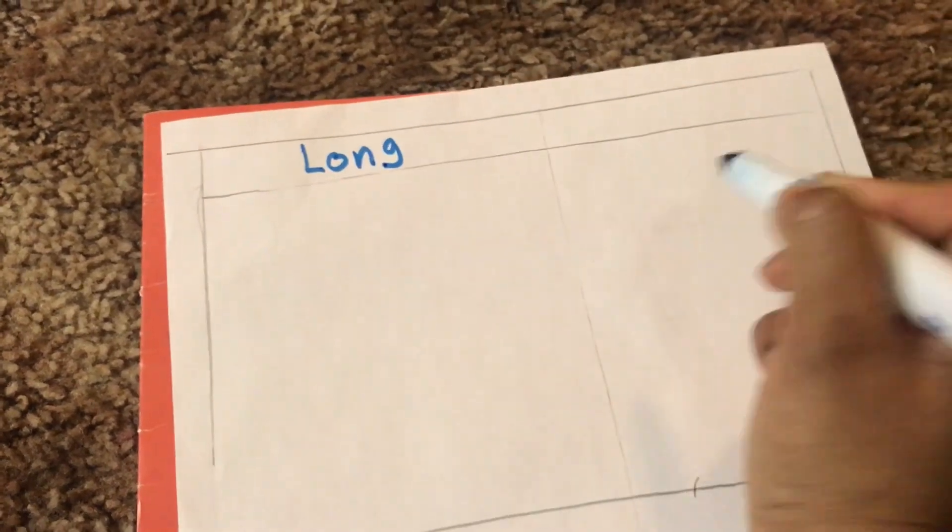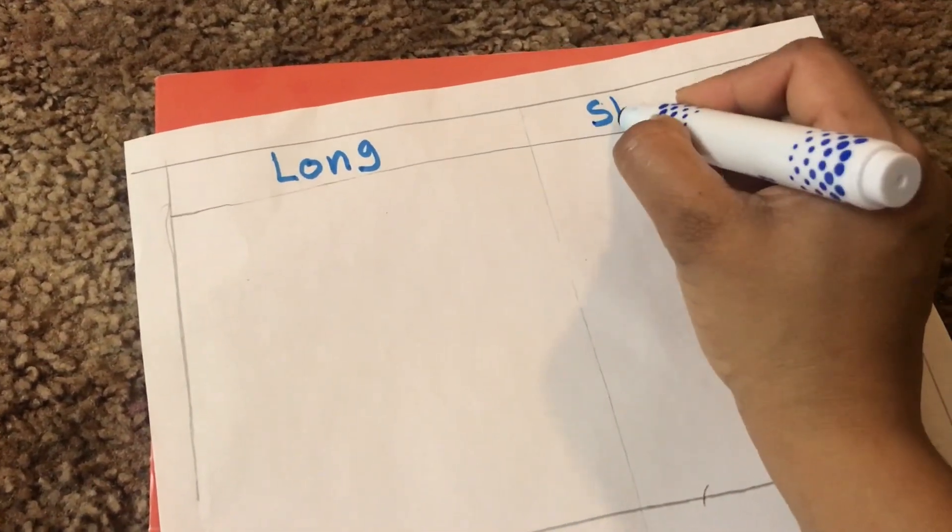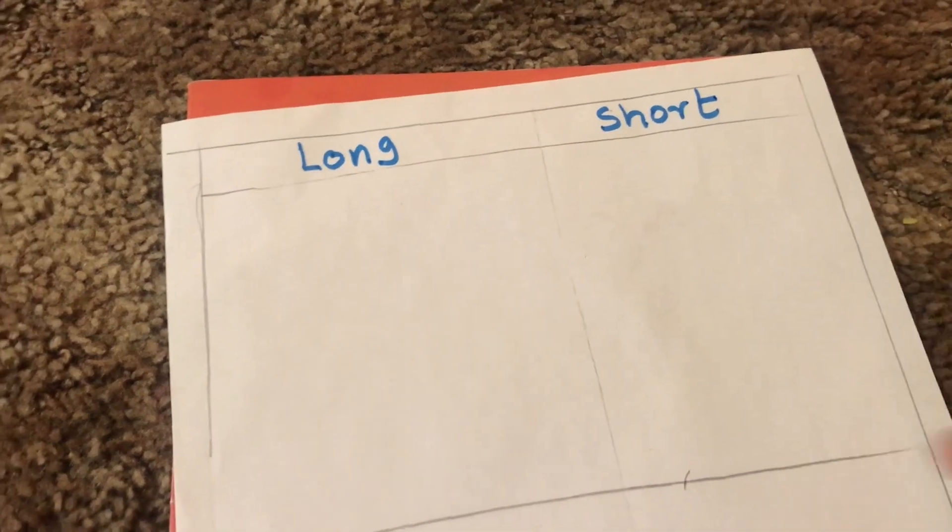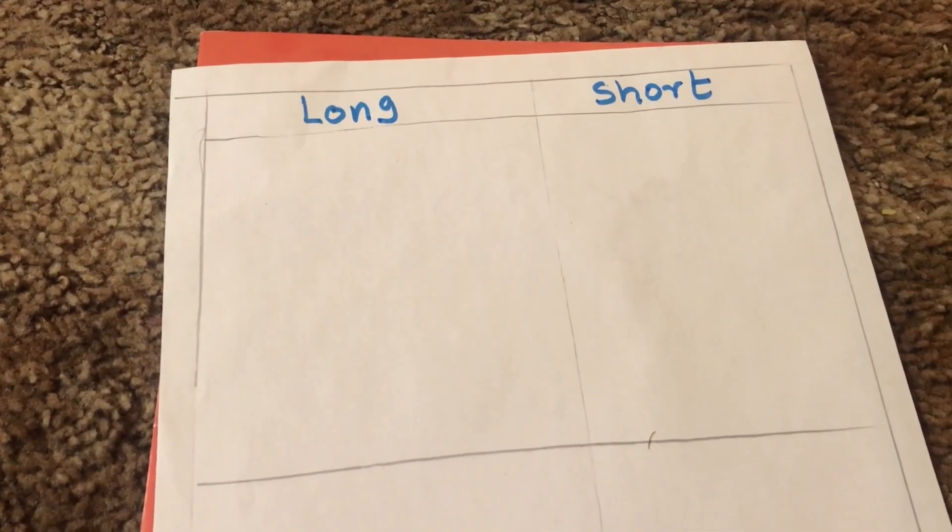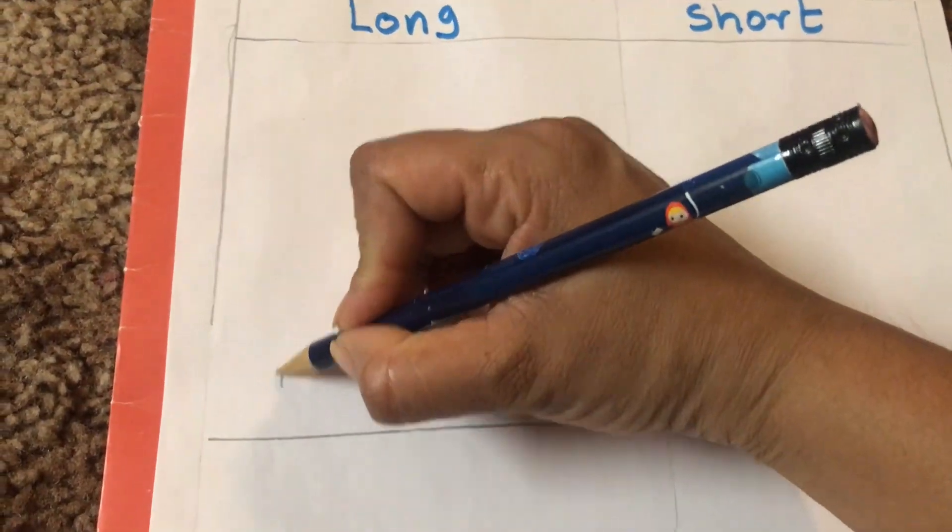For teaching this concept, once again take a plain white paper and divide the plain paper into two columns. Label one column as longer and label another column as shorter.